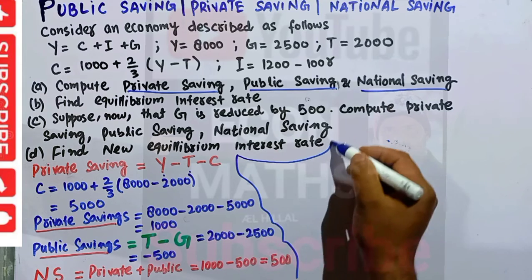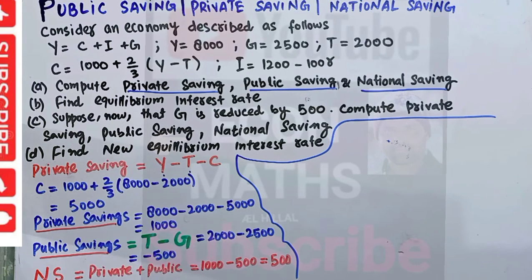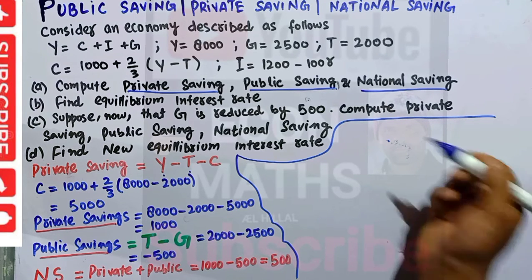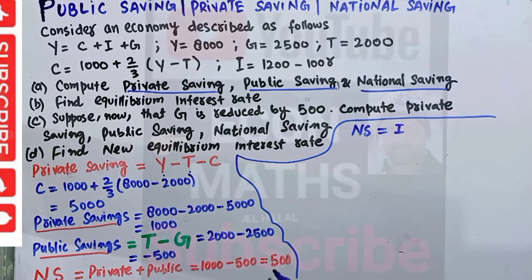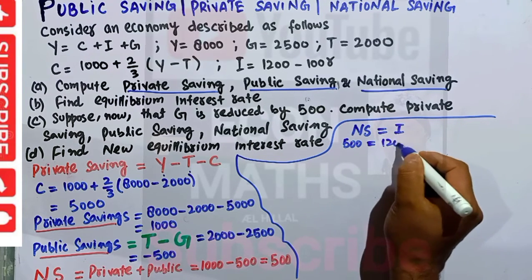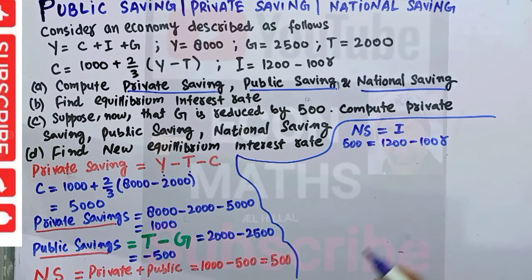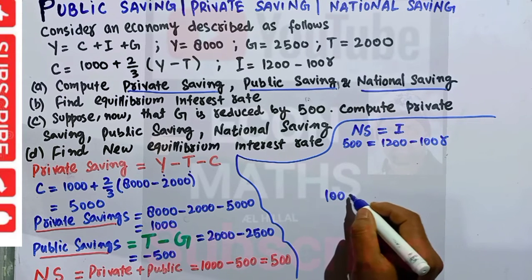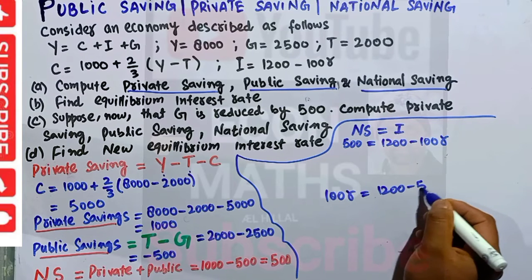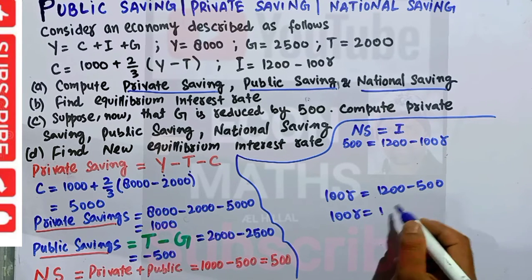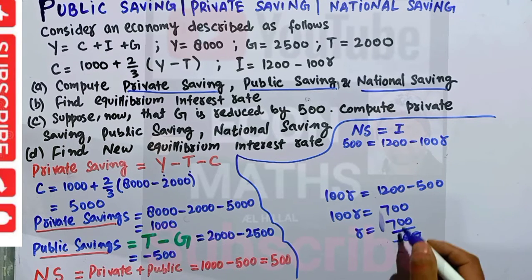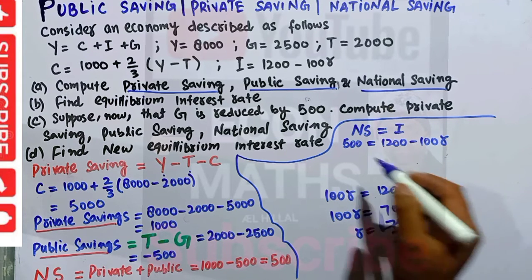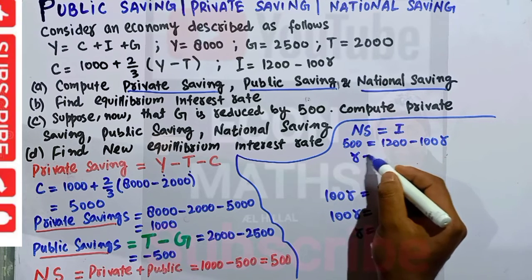For the second part, we find the equilibrium interest rate. In equilibrium, national savings must equal investment. National savings is 500, and investment is given as 1200 minus 100r. So 500 equals 1200 minus 100r, which gives 100r equals 1200 minus 500 equals 700, therefore r equals 7.